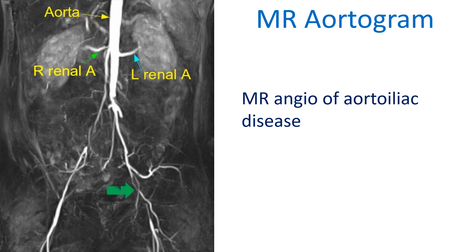The left common iliac also has a tight lesion progressing to a near-total occlusion towards the external iliac. The right renal artery has ostial disease, while the left renal artery appears to have a good-sized proximal region.